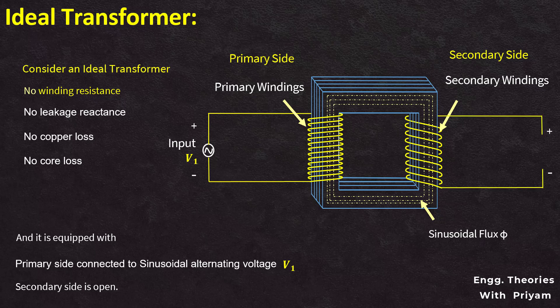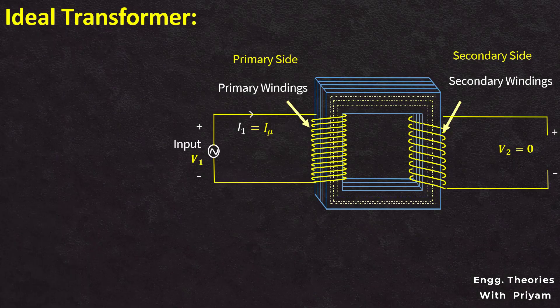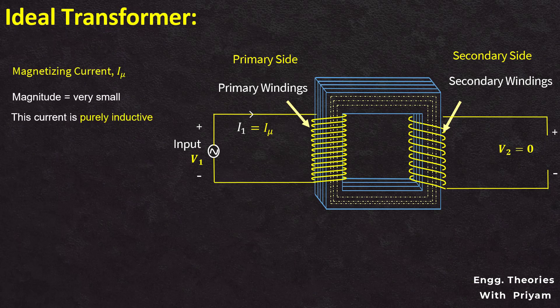In the primary side, this alternating voltage V1 will cause an alternating current in the primary winding. For an ideal transformer, the primary coils are purely inductive, and as the secondary is open, output is zero. So the current drawn by the primary winding will be the magnetizing current I_mu. This magnetizing current I_mu is very small in magnitude and is purely inductive, so it will lag the alternating voltage V1 by an angle of 90 degrees.